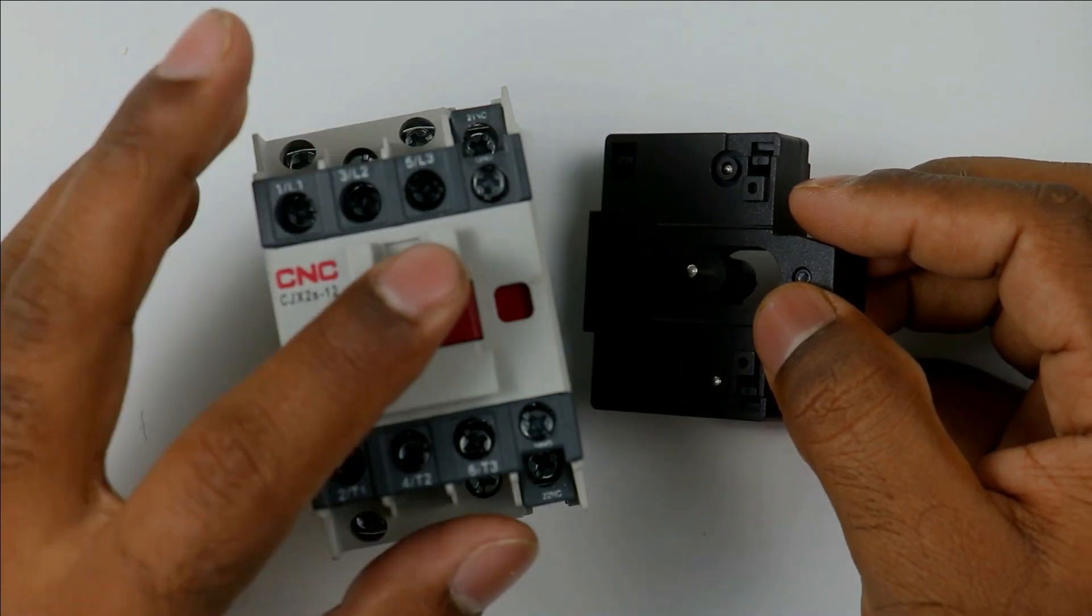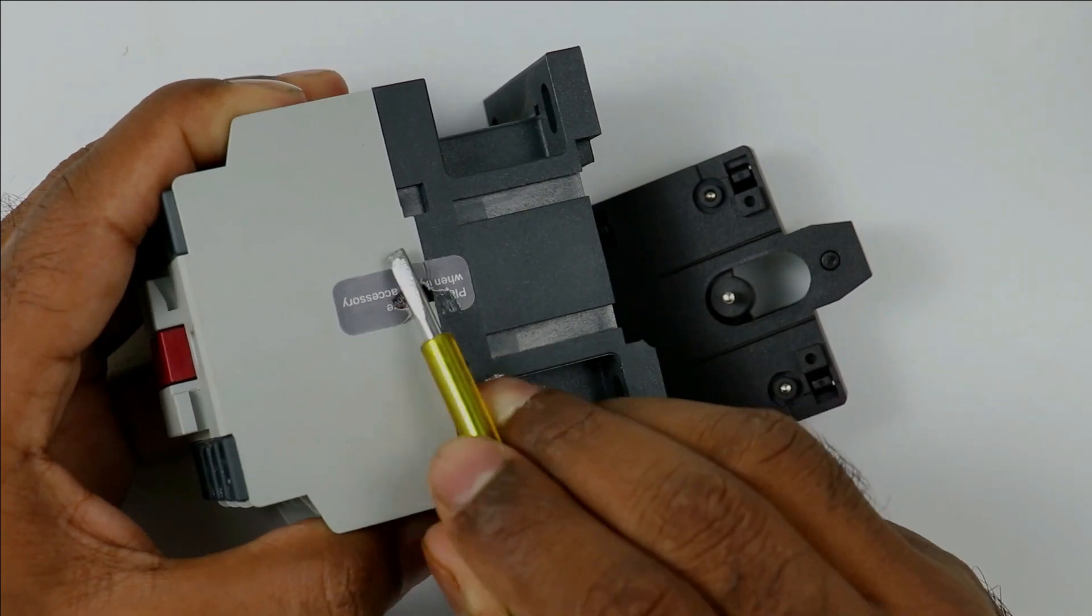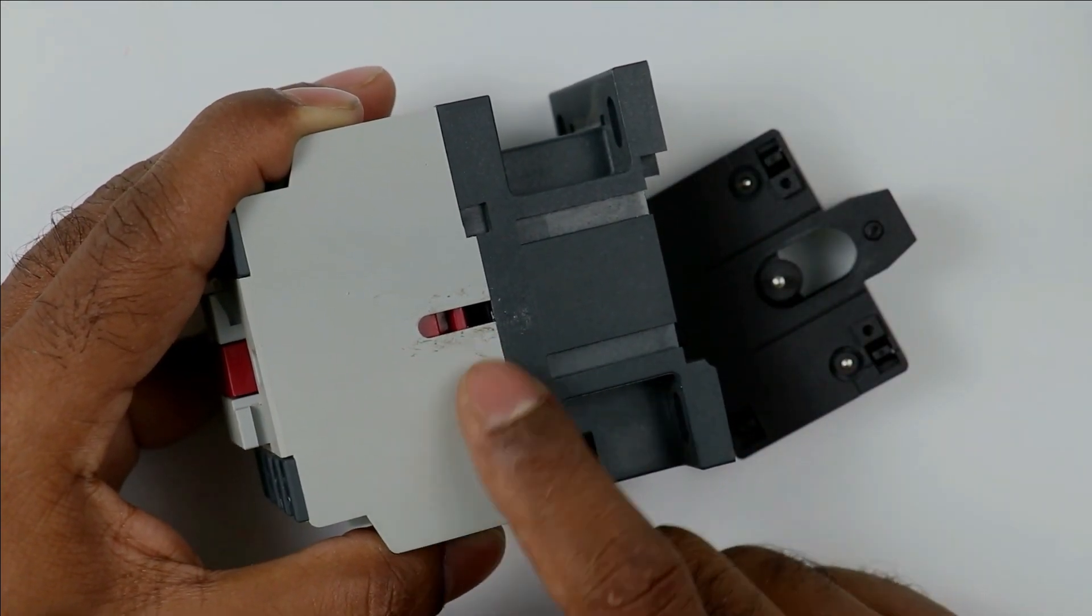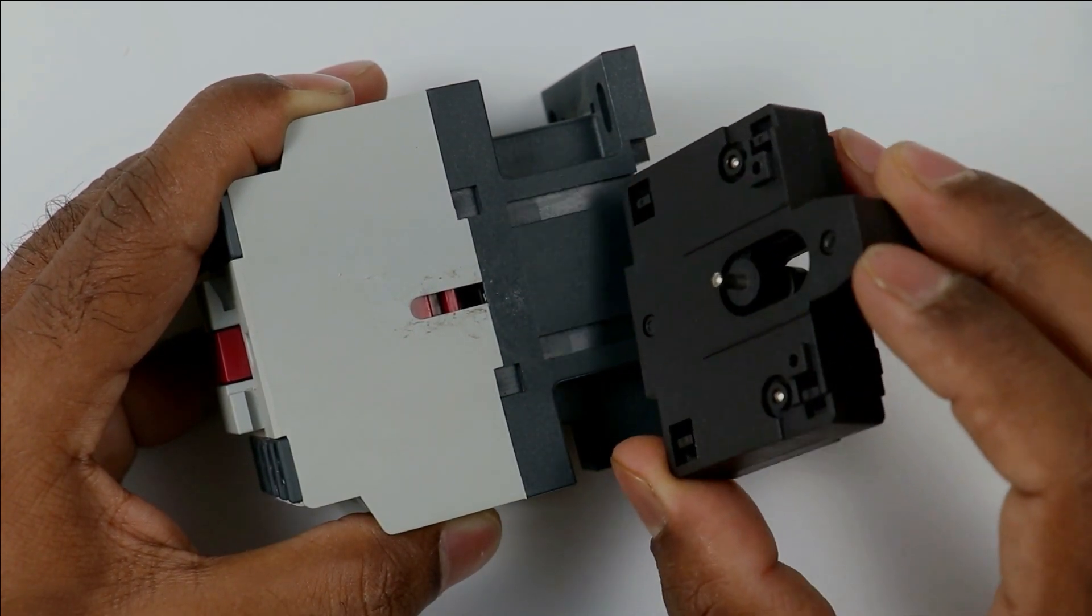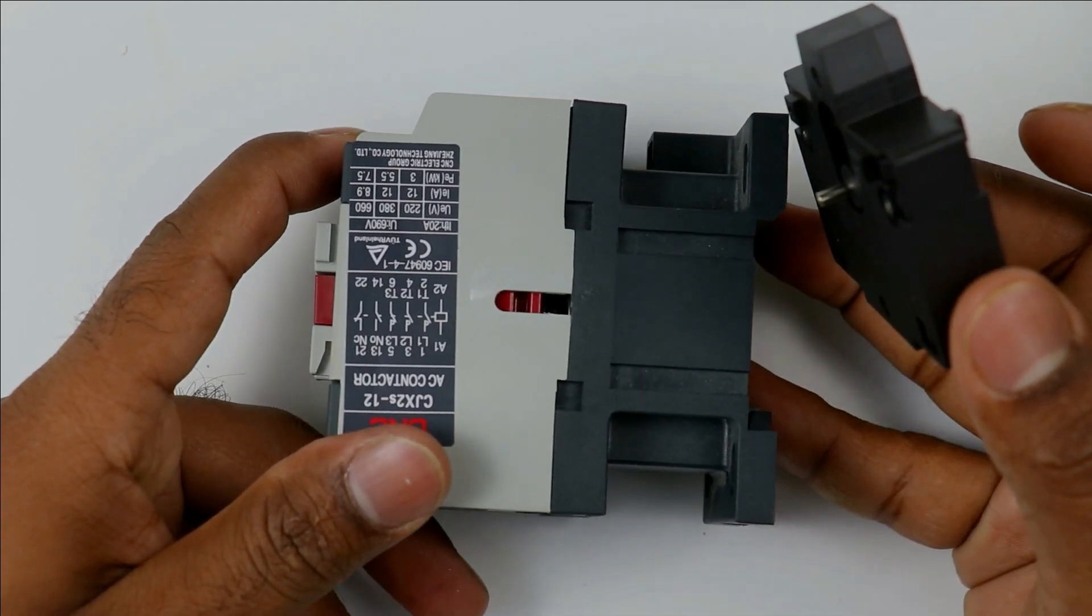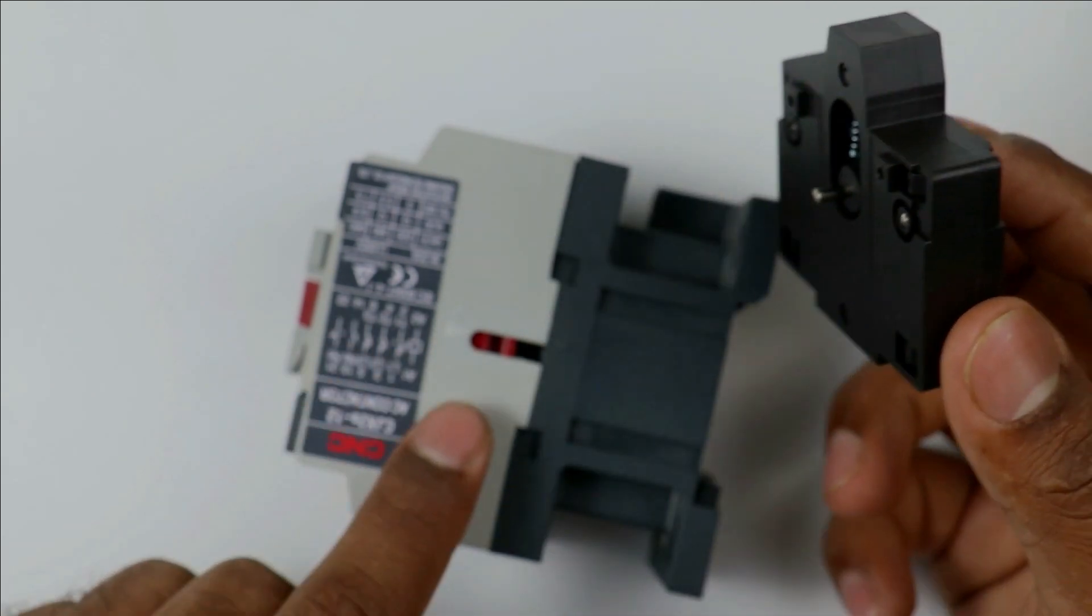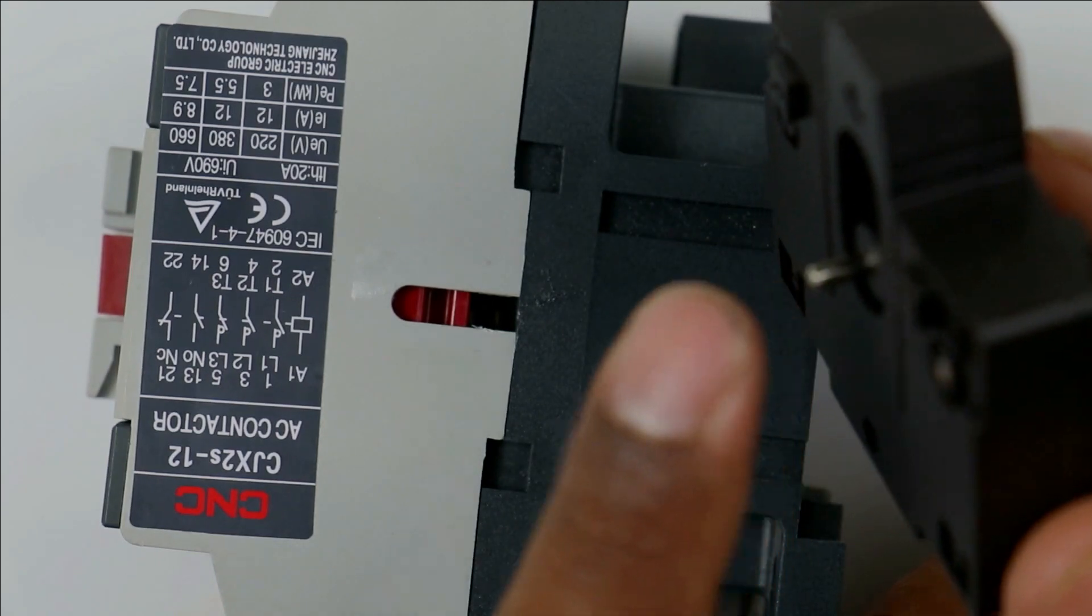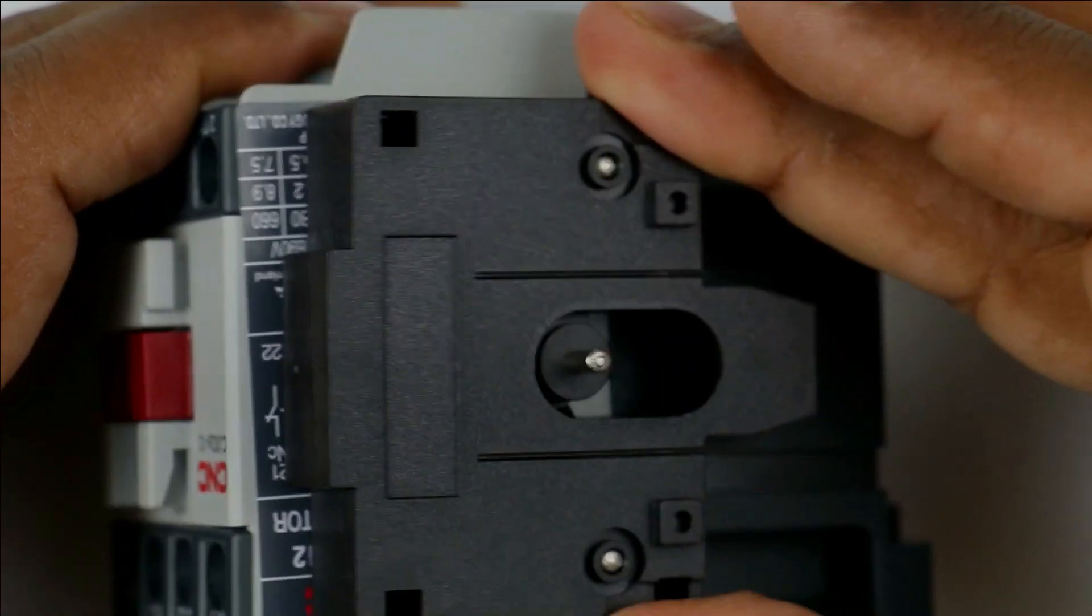In this contactor, if I look at this side, you can see a cover is there. First remove this cover. When you remove this, you will see something like this. Now we will have an option here to mount this contact. There is a simple way to mount this. What you have to do is place your contactor in this position. Now the contact you have has a knob. Take this knob and look at the middle of contactor. A slot is present there. You have to place this lever here. This has mounted perfectly.